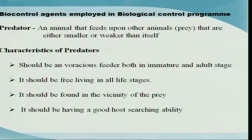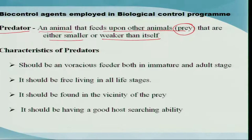There are three major biocontrol agents that play a major role in the biocontrol program. One such agent is the predator. A predator is any animal that feeds upon other animals - called prey - that are either smaller or weaker than itself. What should be the character of a predator? When selecting any predator, it should fulfill certain characters: it should be quite active, have good host-searching ability, and be a very voracious feeder - meaning in both the immature stage and adult stage it should be in an actual feeding stage. It should also always be found in close vicinity to the prey.